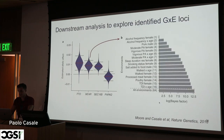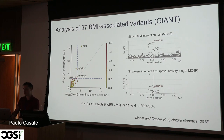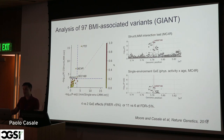The real data results confirm what we found in simulation. Comparing the interaction test p-values from the multi-environment G×E test from StructLMM versus the single environment test, we discover more: 4 loci versus 2 at a family-wise error rate of 5%, and even more signals at FDR 5%. This is an example of how drastic the improvement in power can be — for MC4R, we have a very strong signal from the StructLMM model, but if you consider the best single exposure and test for that alone, the signal drops significantly. What's likely happening is that these interactions are driven by multiple environments, and by aggregating all environments together the test is more powerful than considering each environment in isolation.